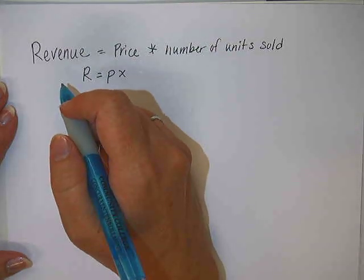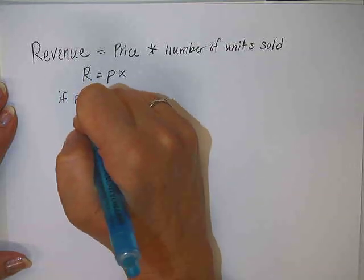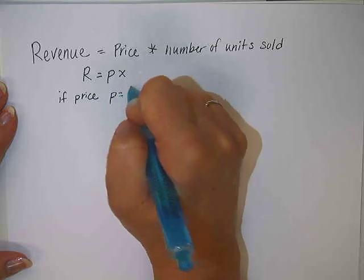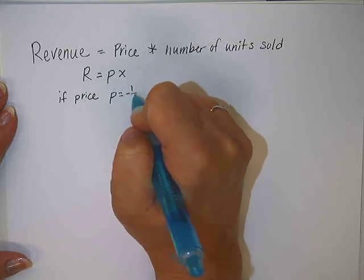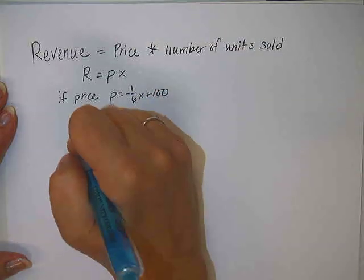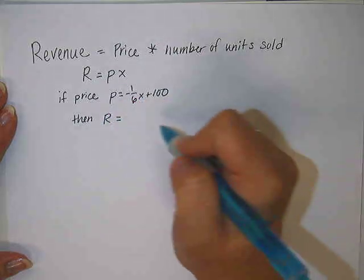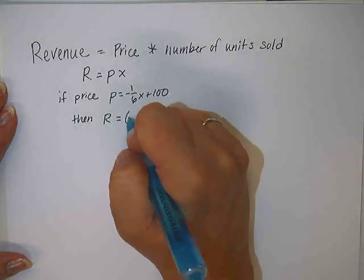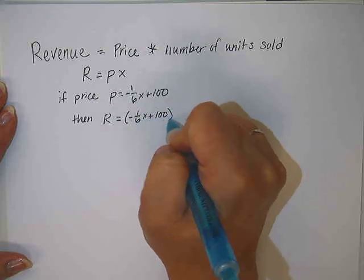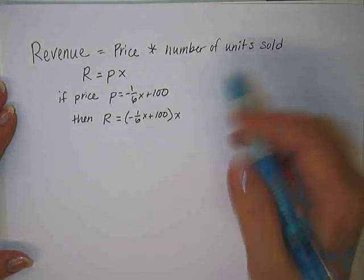This particular problem, I'm actually going to provide you with an equation for the price. If price can be modeled with the equation P equals negative one-sixth X plus 100, then what would revenue equal? Well, revenue would be equal to the price negative one-sixth X plus 100 times the number of units X.